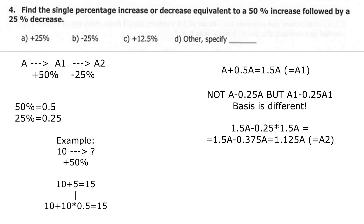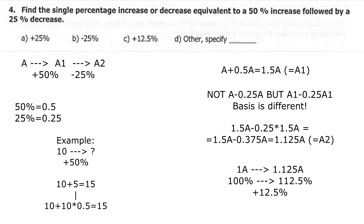So we started at A, which is 100%, and ended at 1.125A, which is 112.5%. This means the price went up by 12.5%. That is the actual answer: a net increase of 12.5%. Be very careful with these tasks — they are tricky because you must always track which number you are taking the percentage from.